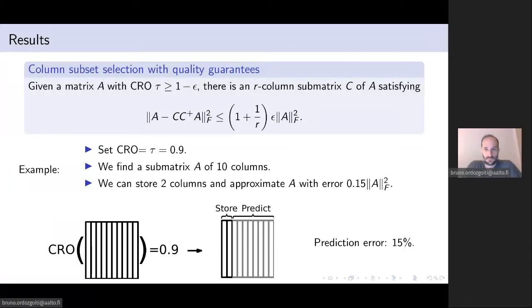That is, if we only store this submatrix of A and we discard the rest of the columns, we can recover the discarded information with bounded error as given by this inequality. And this is based on known results for column subset selection. So as an example, if we find a matrix of 10 columns with CRO equal to 0.9, we can store just two of these columns and approximate the rest of the matrix with error bounded by 15 percent.